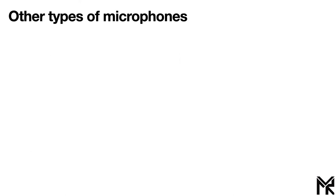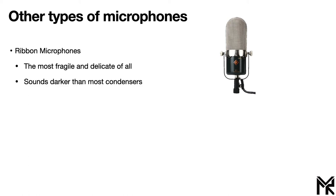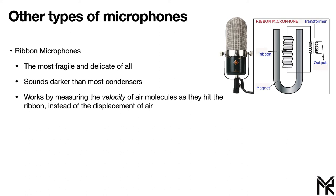Those are the main types you'll see in about 90% of studios, but there are others. One of the least common nowadays are ribbon microphones — the most fragile and delicate of all. Ribbon microphones tend to have a darker sound than most condensers, largely due to their construction. They work differently in that they measure the velocity of air molecules as they hit the ribbon inside the microphone, rather than air displacement. Inside, a metal or aluminum ribbon and a magnet work together so that individual air molecules induce a current through a transformer, which is then output as a voltage change.